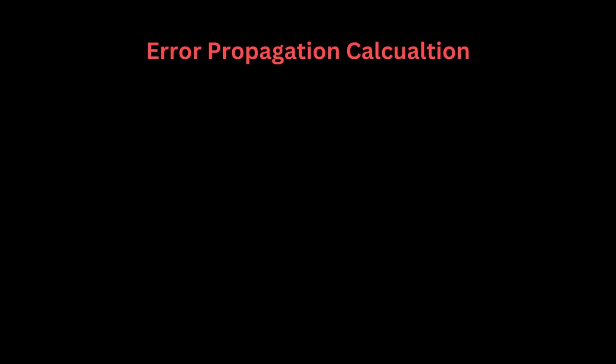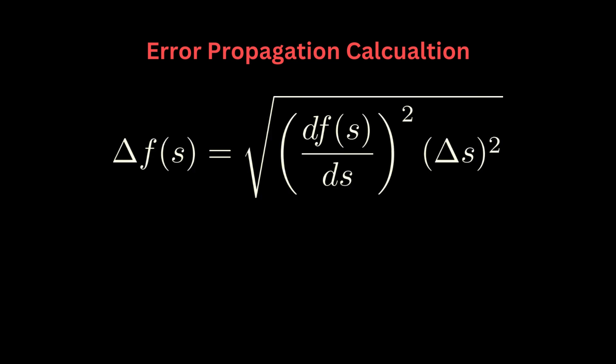Now I want to do a simple calculation called error calculation or error propagation of a function. It is a well-known formula to calculate error using differentials. I will use this to calculate the error in momentum as a function of wavelength, where f will be momentum, and s the wavelength. We'll first differentiate momentum with respect to lambda. So we get this. Now we substitute this in the formula above.